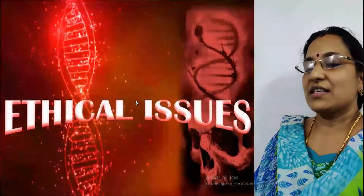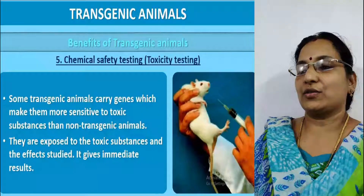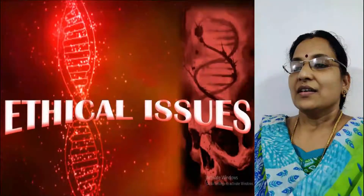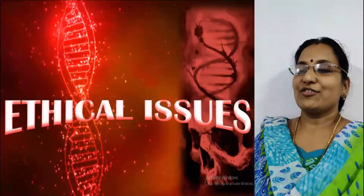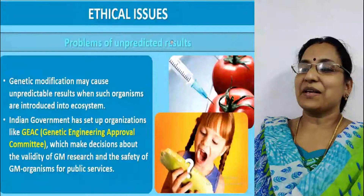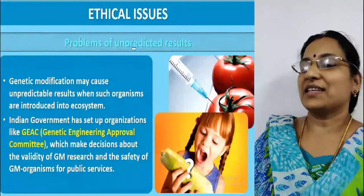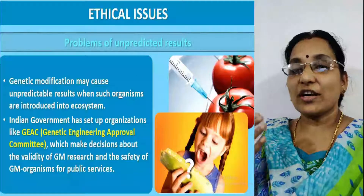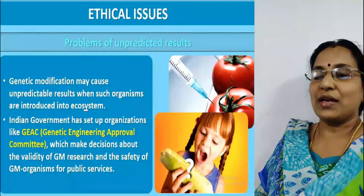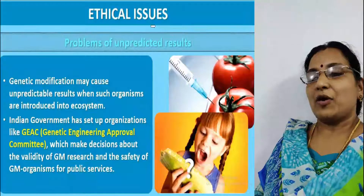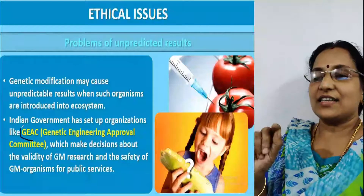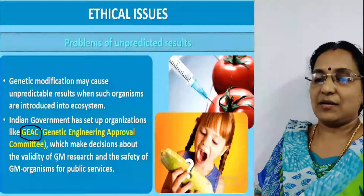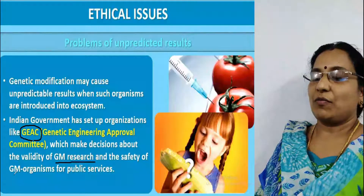That covers transgenic animals. The last area of this lesson is ethical issues. Biotechnology products can give unpredicted results. Genetic modification may cause unpredictable results when organisms are introduced into an ecosystem. The Indian government has set up organizations like GEAC — the Genetic Engineering Approval Committee — which makes decisions about the validity of GM research and the safety of GM organisms for public services.